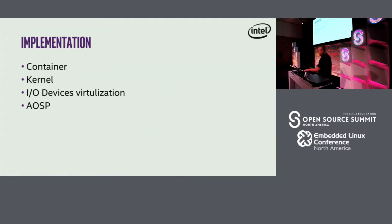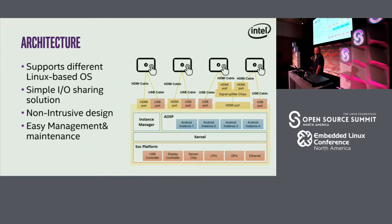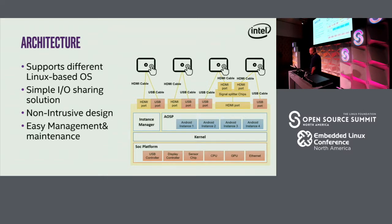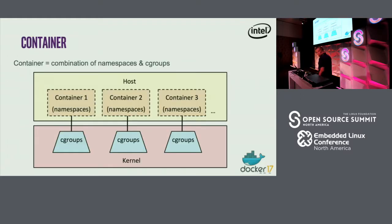We have introduced the architecture for our solutions. For different use cases, we may have different feature sets. For example, for cloud gaming it is different from the IoTG use case — for cloud gaming there are fewer I/O devices and the most important factors are instance density and GPU rendering. So the architecture may have some small changes. Now we will go through our implementations: container, kernel modification, and I/O. The most important technology our solution is based on is the container.